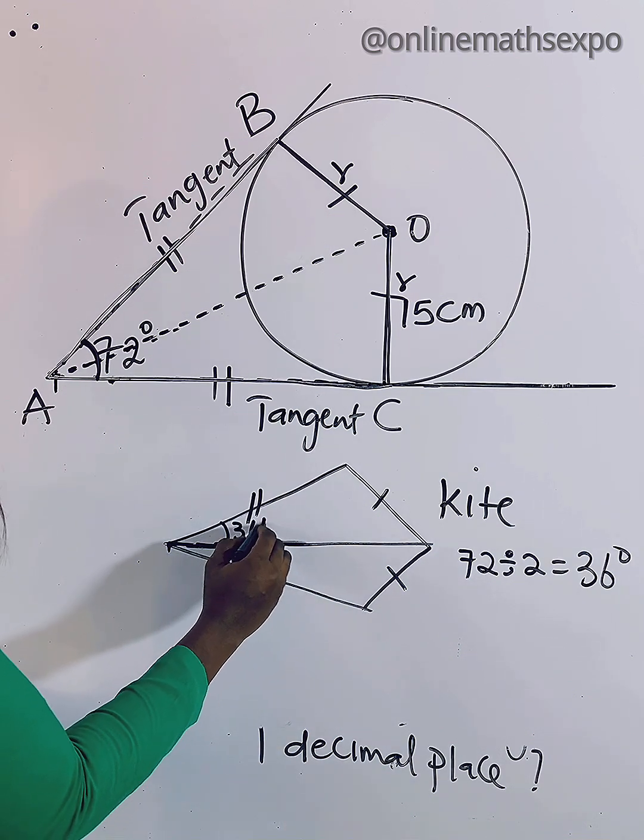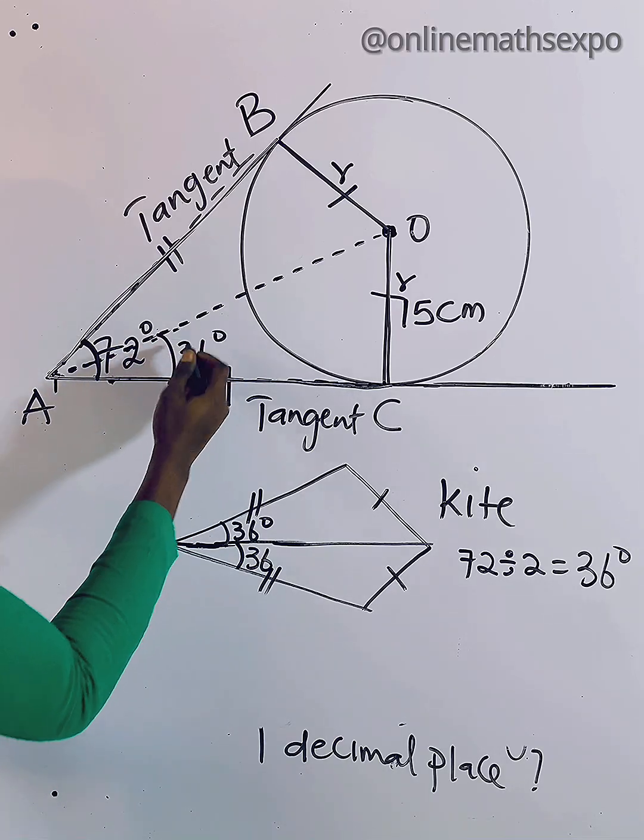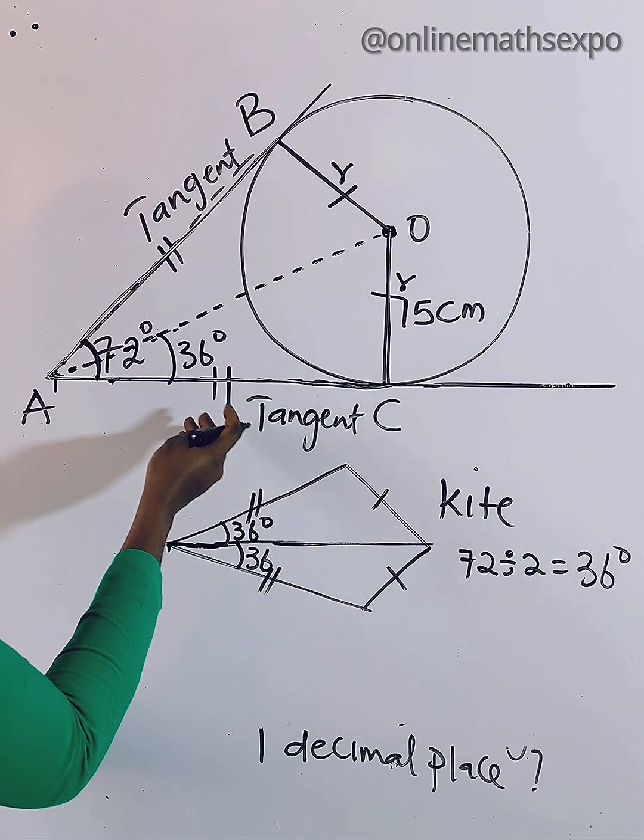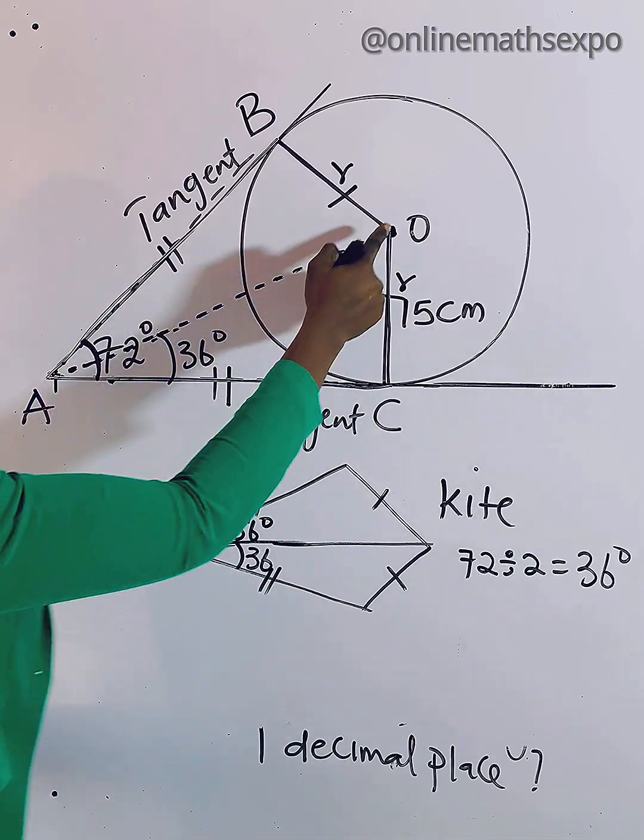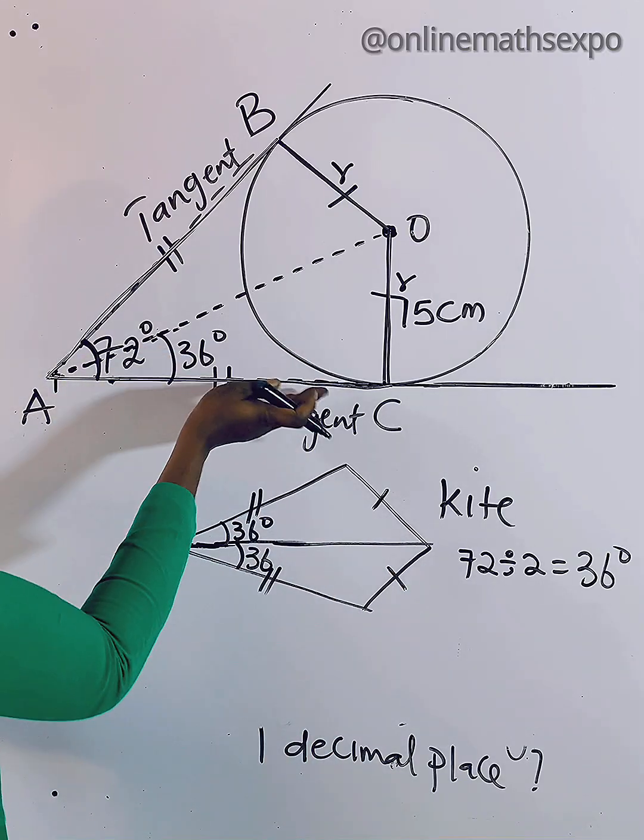So if this part is 36 degrees, will it help us to find the value of this? Will it help us to find the length of AO? Yes, let's go back.